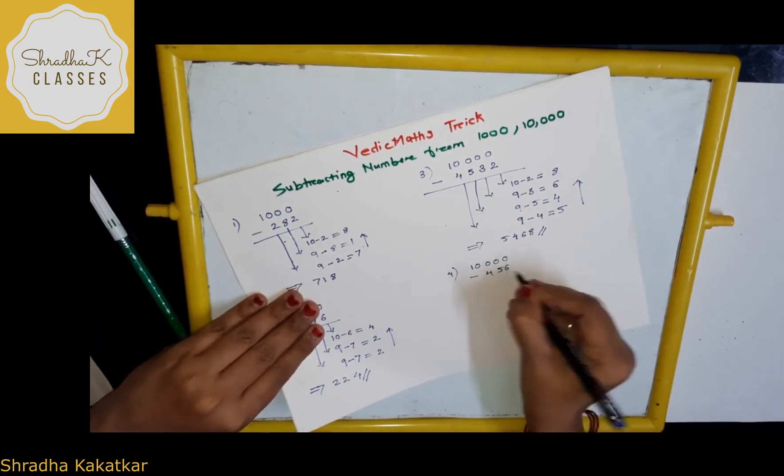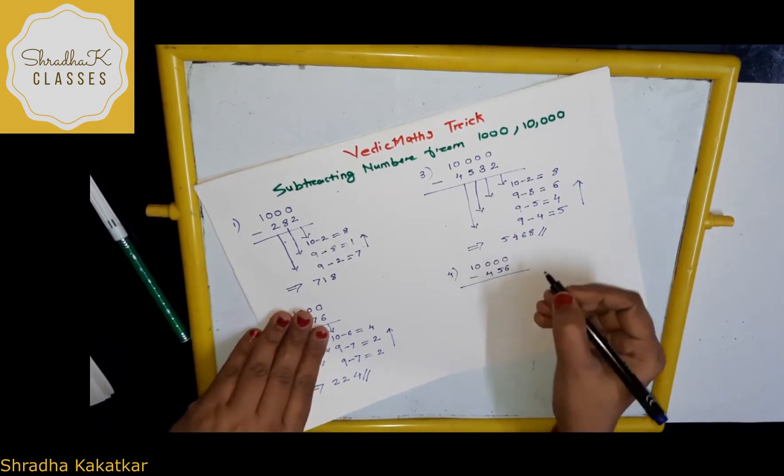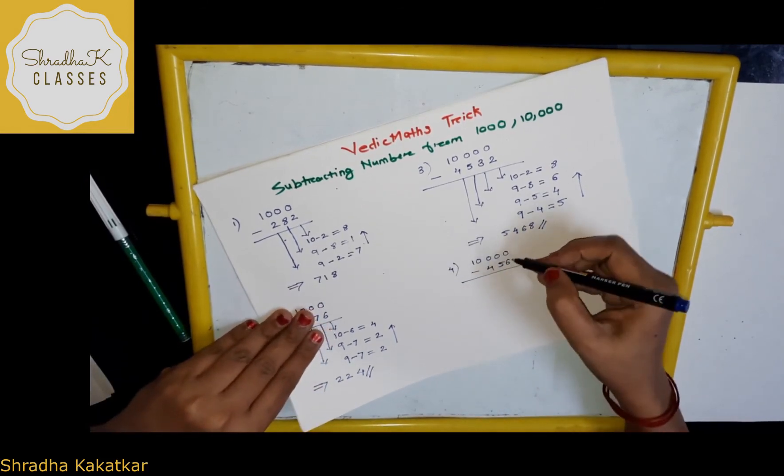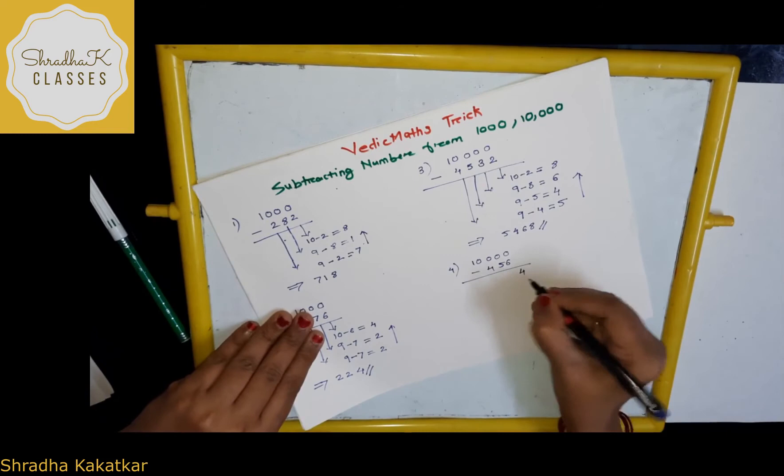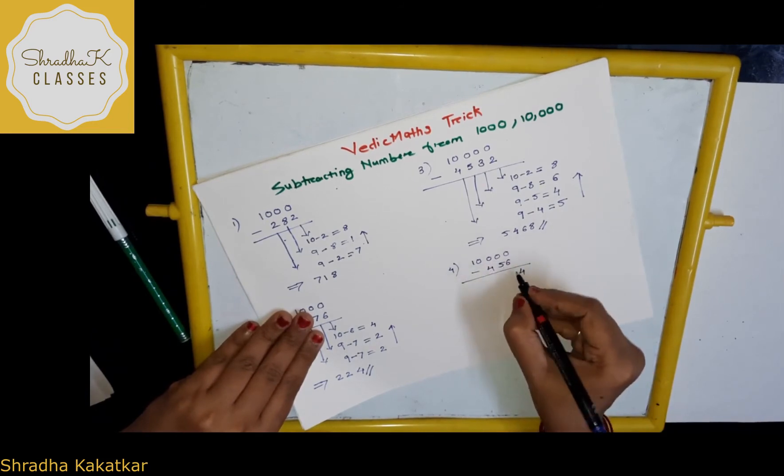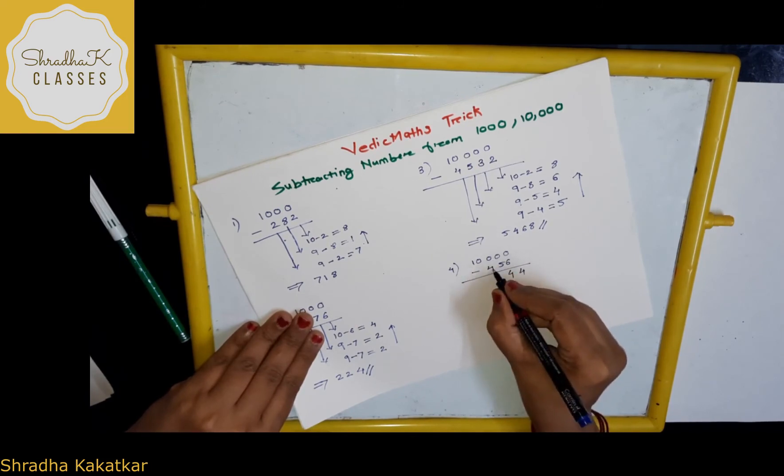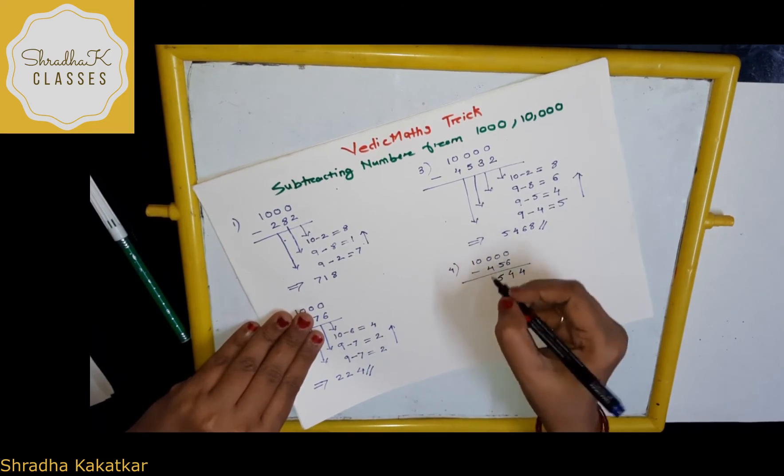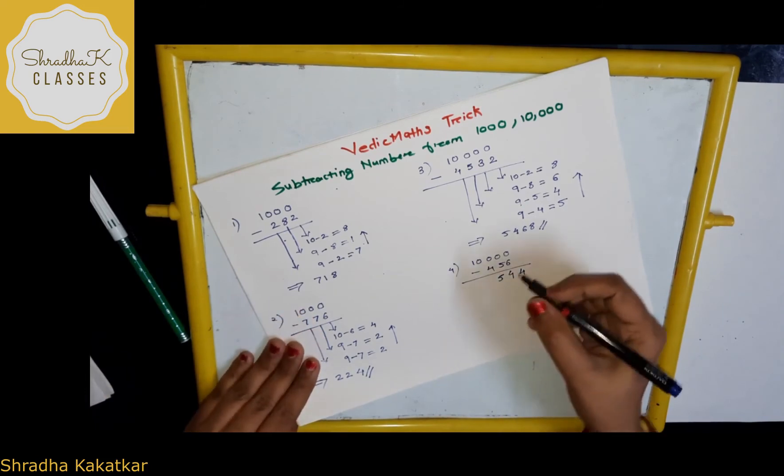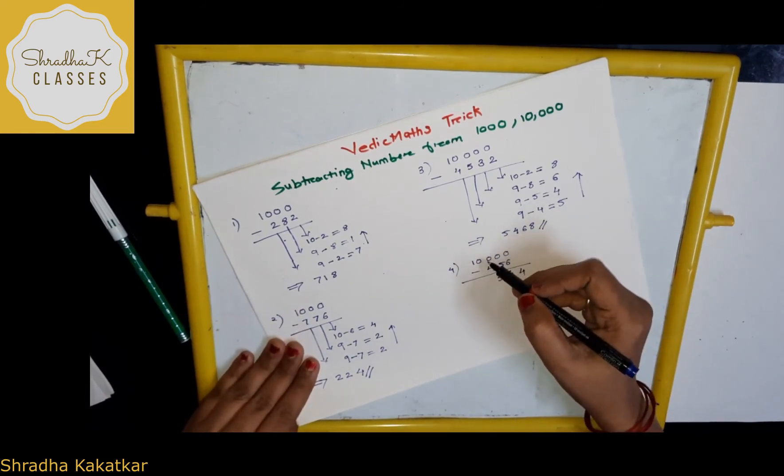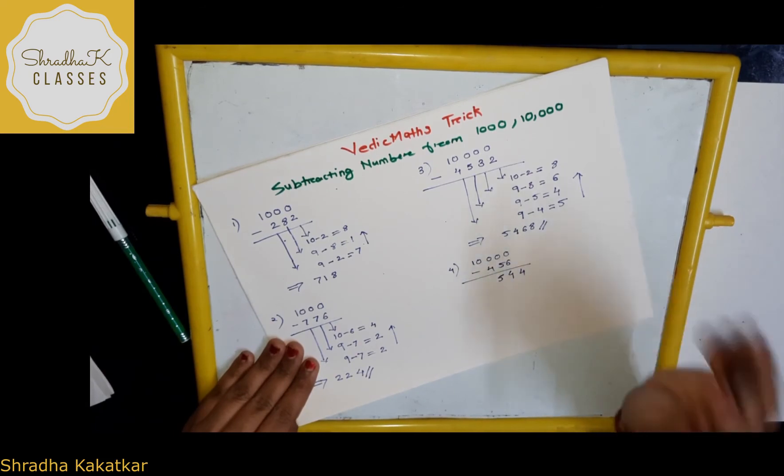Minus 456. What you will do now? Just see. 10 minus 6, 4. 9 minus 5, how much? 4. Again, 9 minus 4, 5. How much? What is the answer? What is the answer? 5, 4, 4? No.